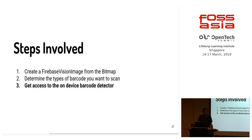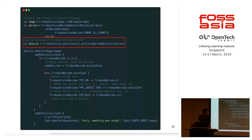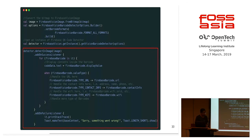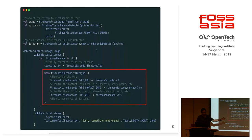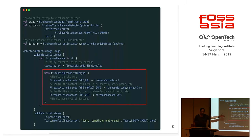Next, get access to the on-device barcode detector — again a single line of code. Lastly, run the detector on the image — Firebase detector dot detect an image, pass in the Firebase Vision image, and attach success or failure listeners. Extract data from the response: depending on the type of barcode, if it contains a URL get the URL, if it contains contact info get the contact info. If it's a URL I want to open it, if it's a driving license I want to validate it, if it's Wi-Fi I want to connect to that Wi-Fi. These things are available out of the box with Firebase ML Kit.